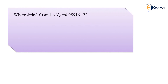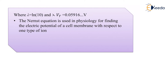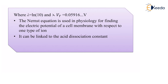In this case, ln(10) times VT equals 0.05916 volts. The Nernst equation is used in physiology for finding the electrical potential of a cell membrane with respect to the type of ions. It can also be linked to the acid dissociation constant. This completes our detailed study of the Nernst equation and the entire expression.